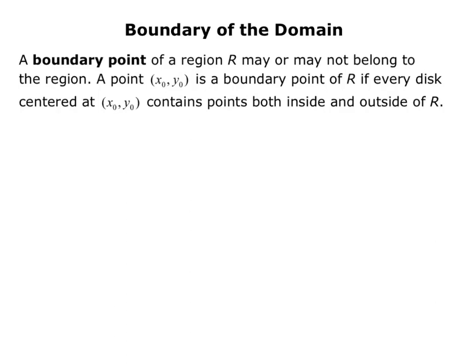A point x0, y0 is a boundary point of R if every disk centered at x0, y0 contains points both inside and outside of R. The boundary of a region R is the set of all boundary points.